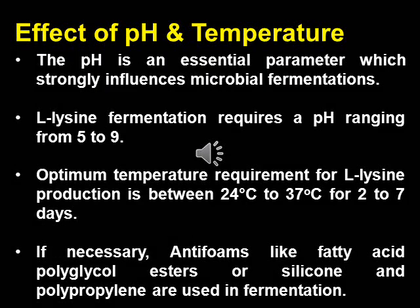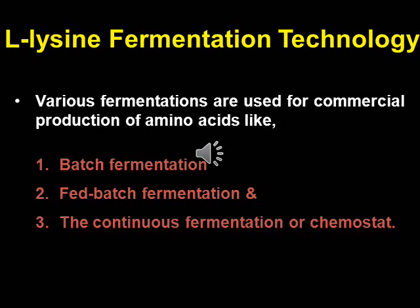pH and temperature play an important role in L-lysine fermentation. The pH is an essential parameter which strongly influences microbial fermentations. L-lysine fermentation requires a pH ranging from 5 to 9. The optimum temperature requirement for L-lysine production is between 24°C to 37°C for 2 to 7 days. Antifoam agents are generally added to control foaming occurring during fermentation; those used in L-lysine fermentation include fatty acid polyglycol esters or silicone and polypropylene.